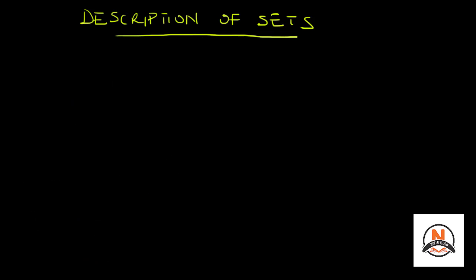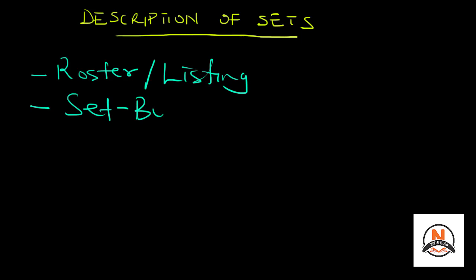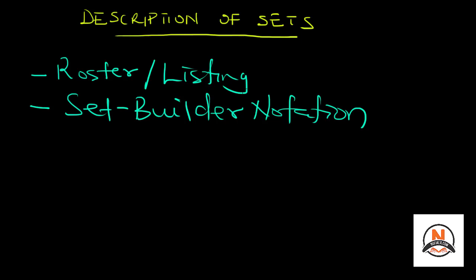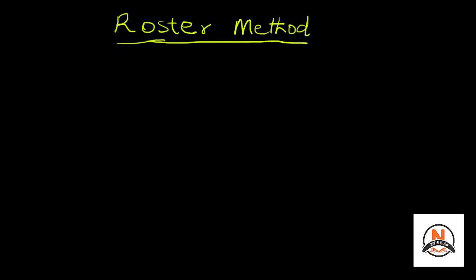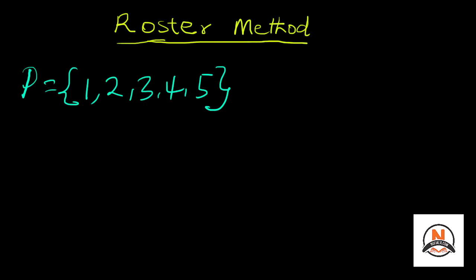Let us now talk about two ways of describing a set: the roster method, also called the listing method, and the set builder notation. With the roster method, we list the elements in the set. Let's consider set P, made up of natural numbers less than 6. We list the elements: 1, 2, 3, 4, and 5. Just looking at set P, we can see all its elements. That is the roster method — we list the elements in the set.